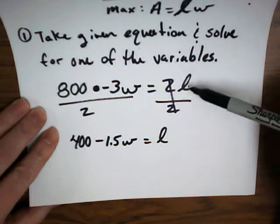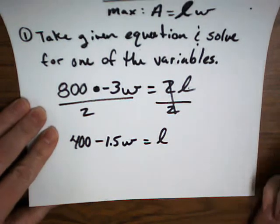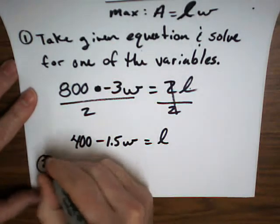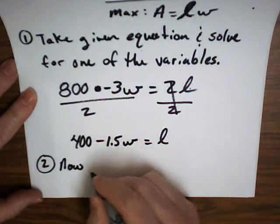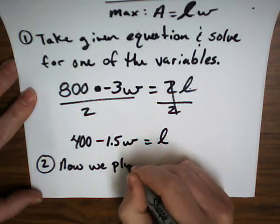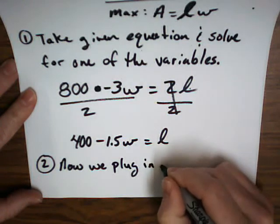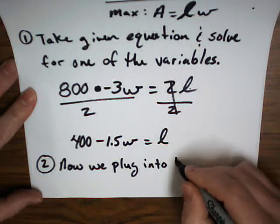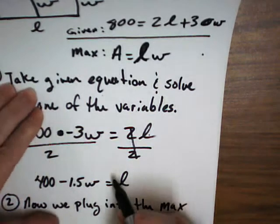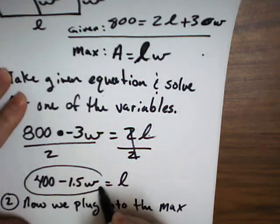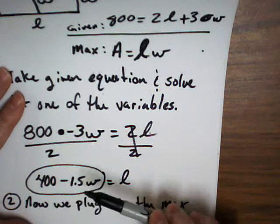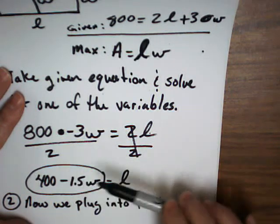And that's one of the reasons why you said you wanted to solve for L. Because you can have nice, easy fractions. Or decimals, I mean. So, now that you have this, what do you reckon we should do? Okay, so we're going to plug in to the max equation. So, what I mean by that is that L right there? This right here, this whole thing I'm going to circle, is L. That is the same thing as your length. If you take 400 minus 1.5 times the width, you'll get the length. So, these two are interchangeable parts.